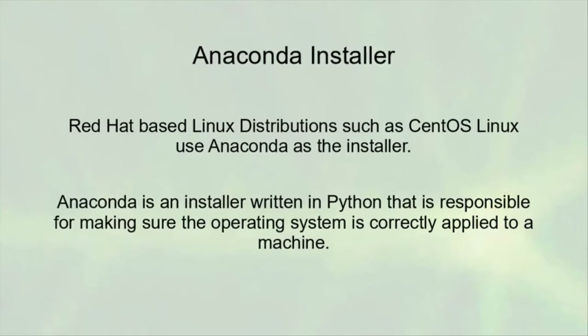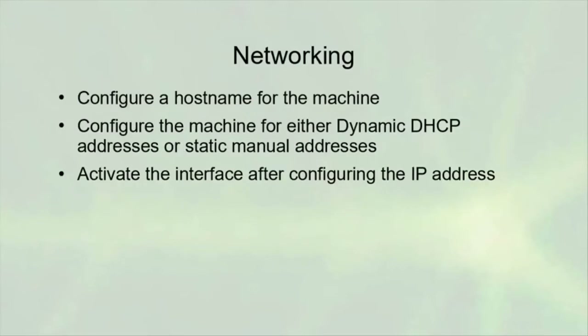Anaconda works great some of the time but sometimes fails more than the actual Linux distribution will fail when running. In Anaconda, you need to configure networking: set a hostname for the machine — don't stay with localhost. Configure either DHCP or static addresses. For static configuration you need an IP address, mask, gateway, and DNS server. After configuring networking, activate the interface so it comes up at start. Set the time zone — do this after configuring networking so it will automatically use network time and the NTP protocol to synchronize with time servers.